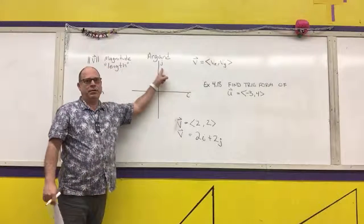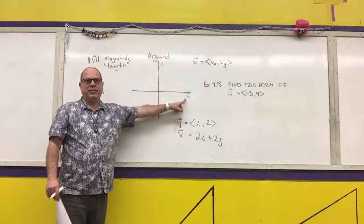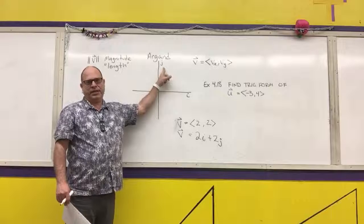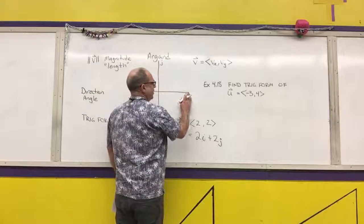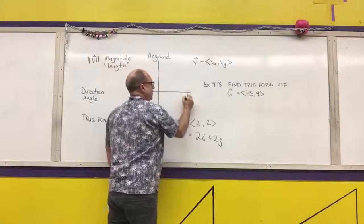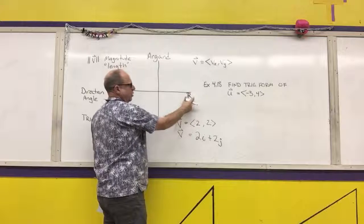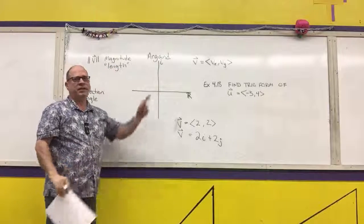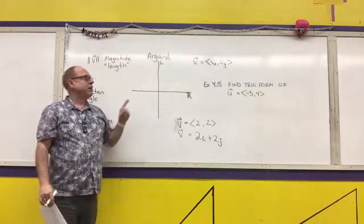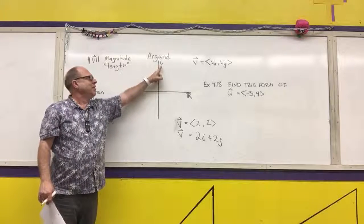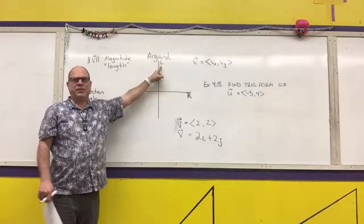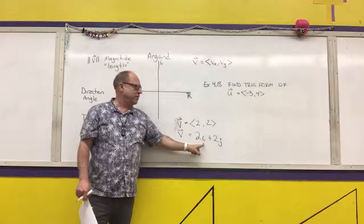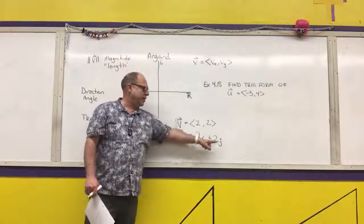Note that in math, i usually means the imaginary number. In electronics and other sciences, j is used to represent the imaginary number. When we graph complex numbers, the first component represents the real part and the y-component maps to the imaginary part — which is why j is used. This i here is not the imaginary number; it's just the horizontal component, and j is the vertical component.